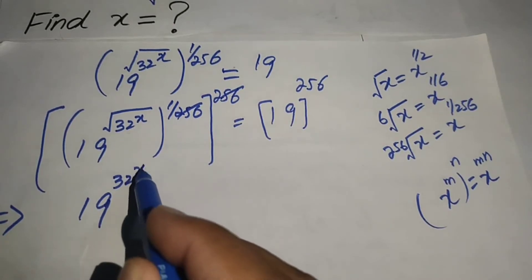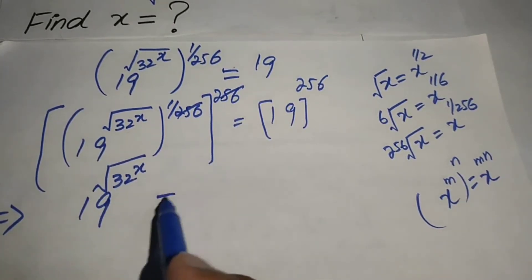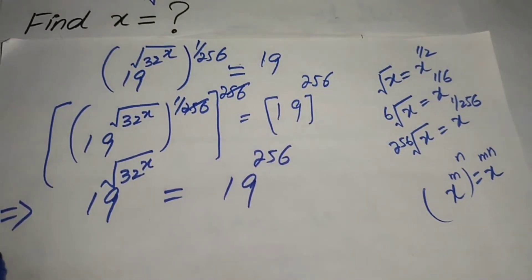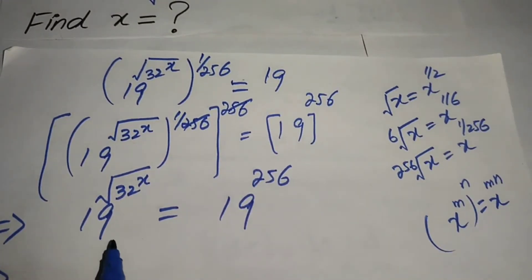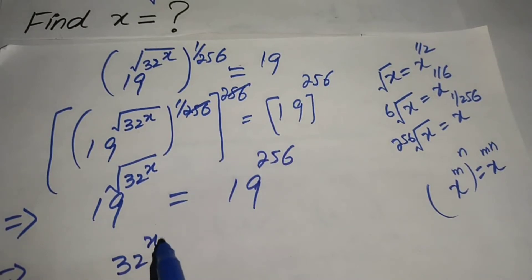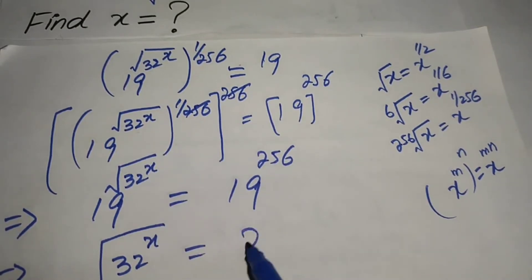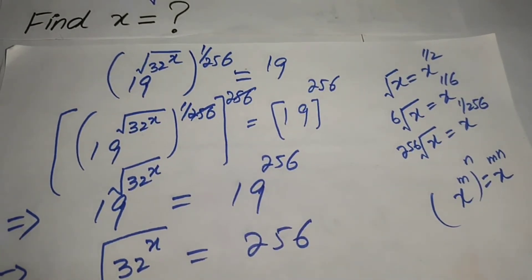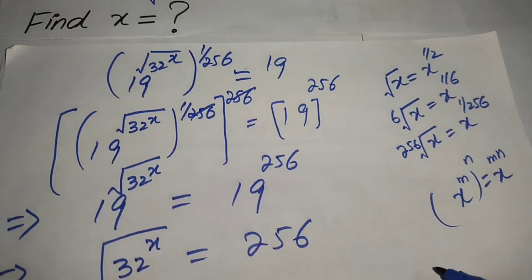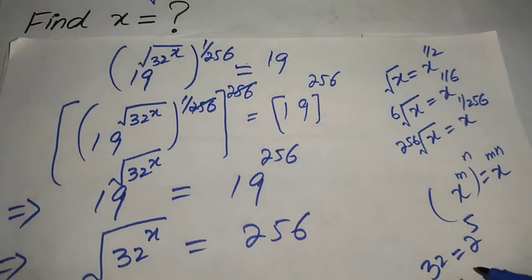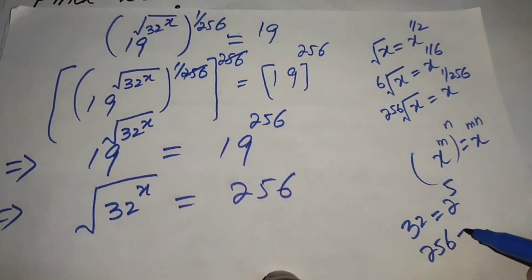Here we see that the bases on both sides are equal — both are 19. So we equate the exponents, and we get 32 to the power x is equal to 256.